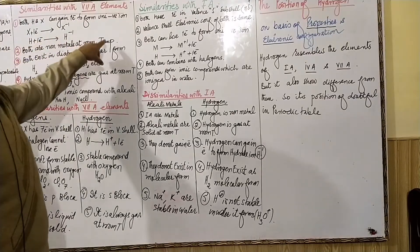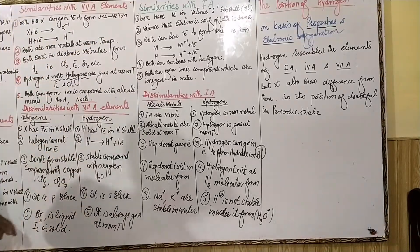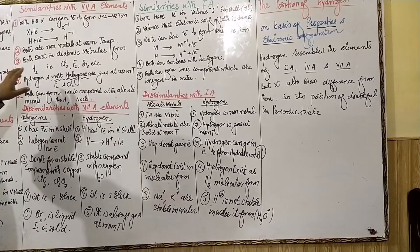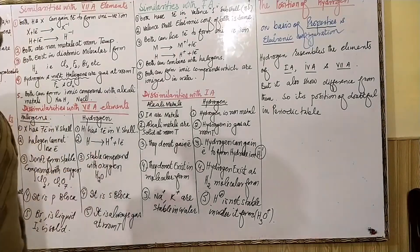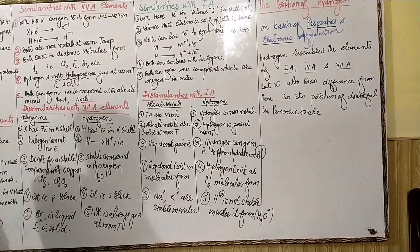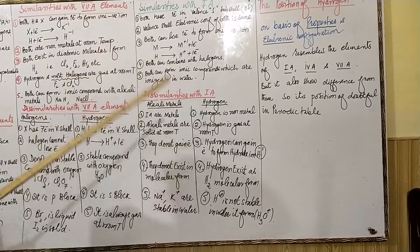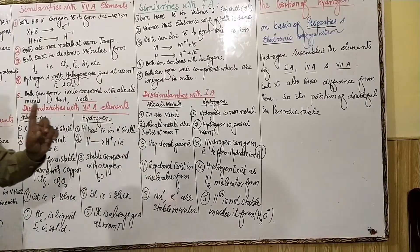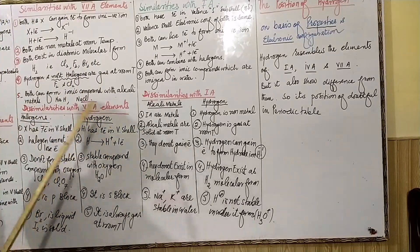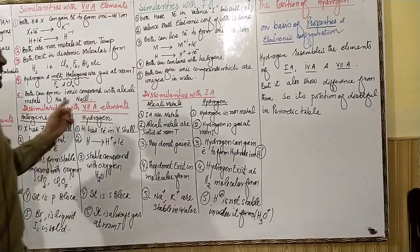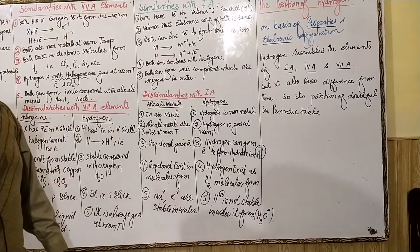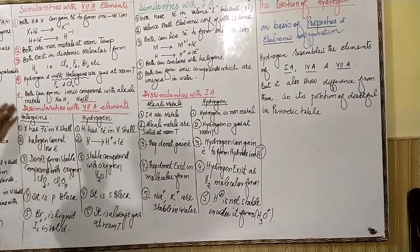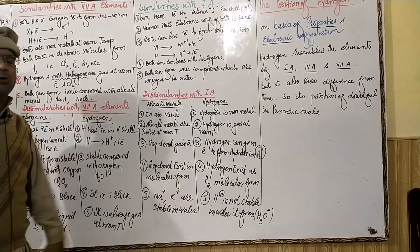Both hydrogen and halogens are non-metals at room temperature. Both exist in diatomic form — hydrogen as H₂, and halogens as Cl₂, Br₂, F₂. Hydrogen and most halogens — fluorine and chlorine — are gases at room temperature (bromine is liquid and iodine is solid). Both form ionic compounds with alkali metals, for example NaCl and NaH.